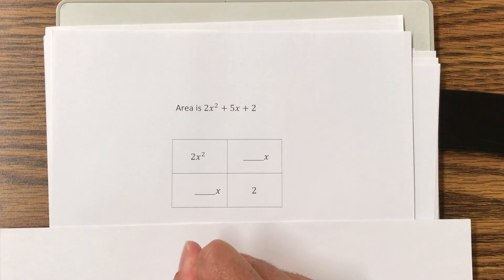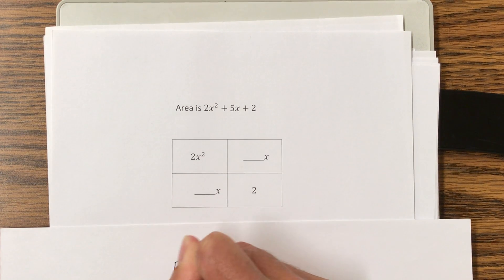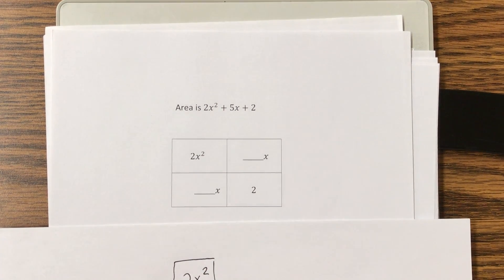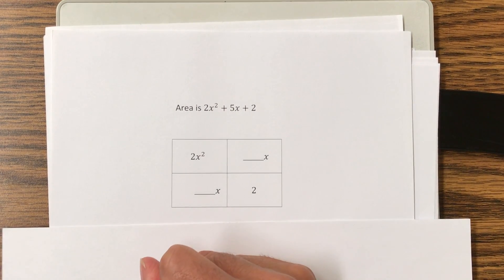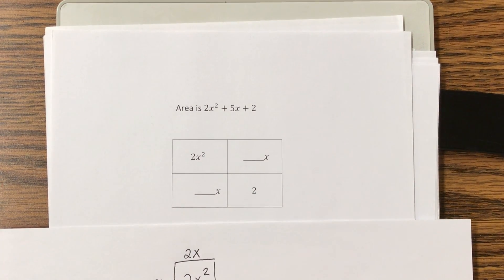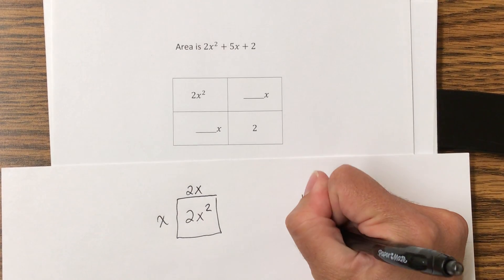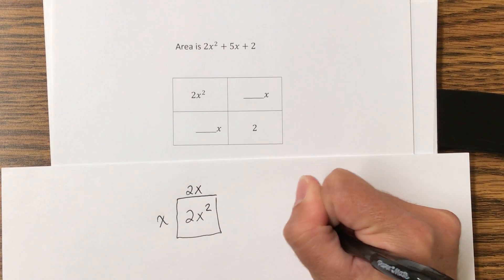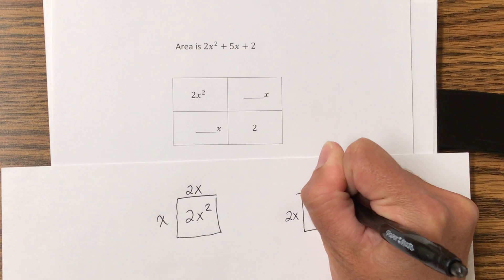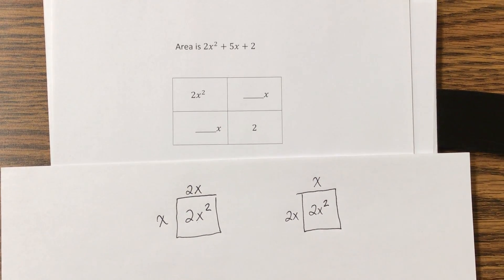If I have 2x squared as an area and I'm trying to find the dimensions, well, again, I've got this possibility of an x and a 2x, or I could flip it around if I wanted to. Call this one 2x and this one x. And really, those are my only two options.